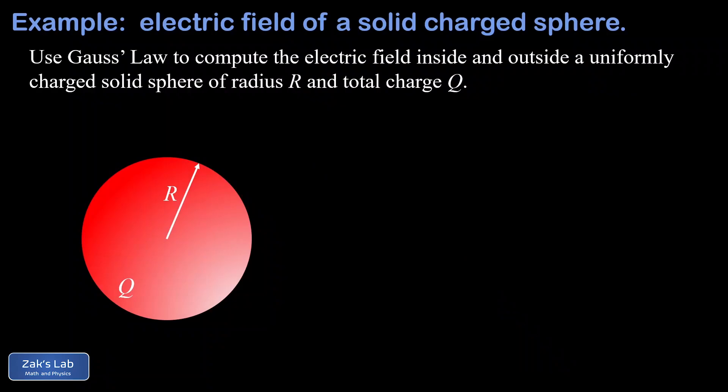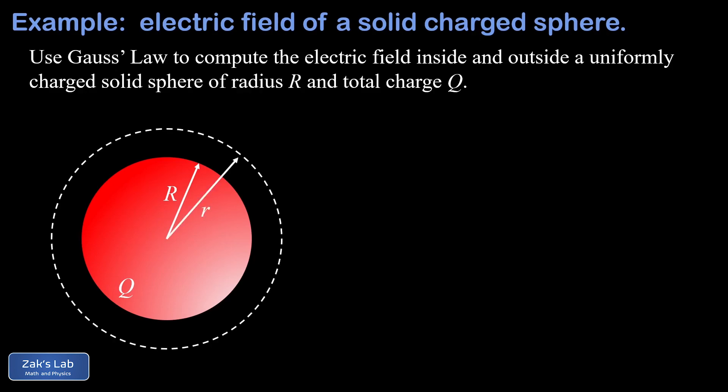In this video we're going to compute the electric field inside and outside a uniformly charged solid sphere with radius R and total charge Q. We're going to use Gauss's Law to get this done. The first step is to choose a good Gaussian surface for the problem — one that shares the same symmetry as the charge distribution we're trying to study.